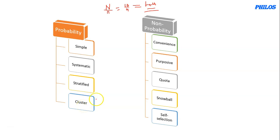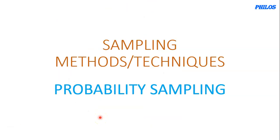For cluster sampling, the population has already been divided by naturally occurring situations. You use all members of one of those divisions as a representative of the others and then question them. Please subscribe to the channel so that when we post the next topic or other important videos, you can easily see them. Thank you.